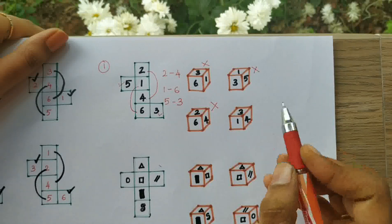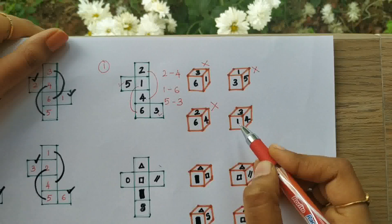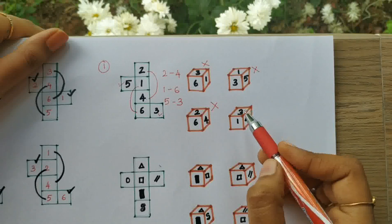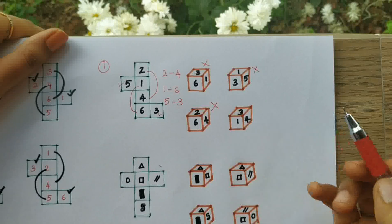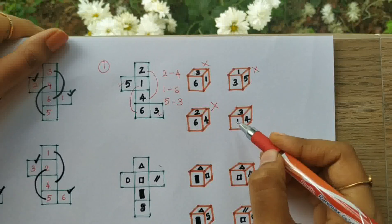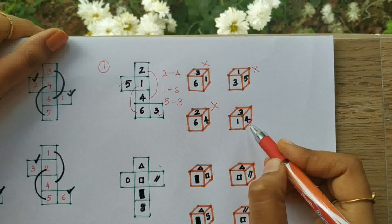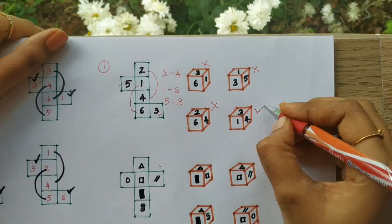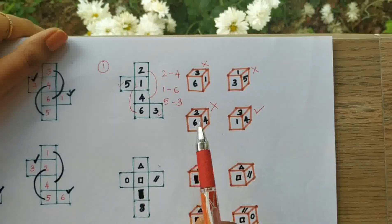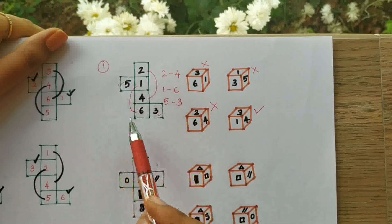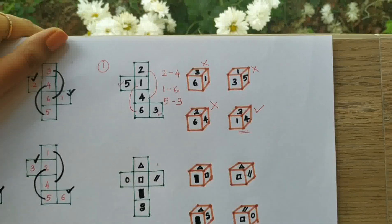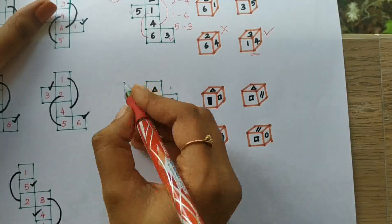For the final option: opposite of one is six — six is not found here. Opposite of three is five — five is not found here either. Opposite of four is two — two is also not found here. So all three checks pass, and the answer is that the cube formed from this unfolded version is this final option.